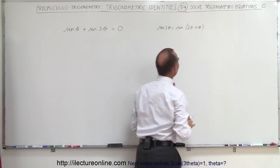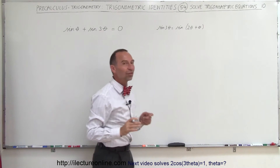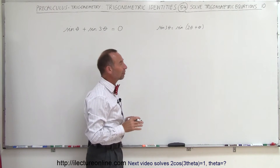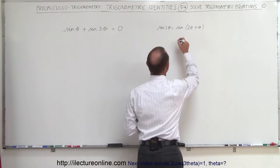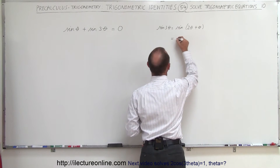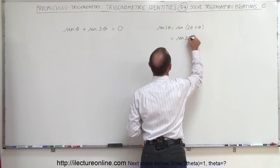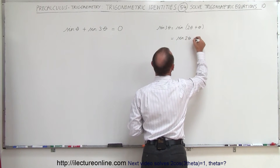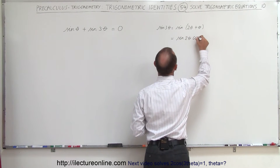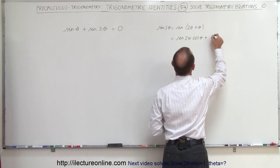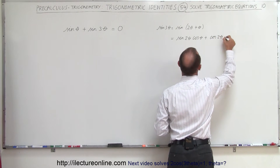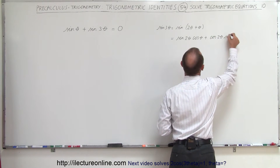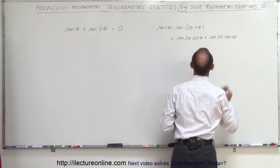Now we have the sine of the sum of two angles, and we know what that equals. That is equal to the sine of 2 theta times the cosine of theta, plus the cosine of 2 theta times the sine of theta.